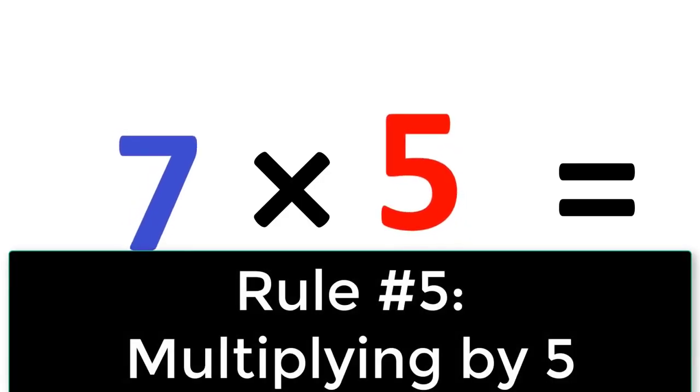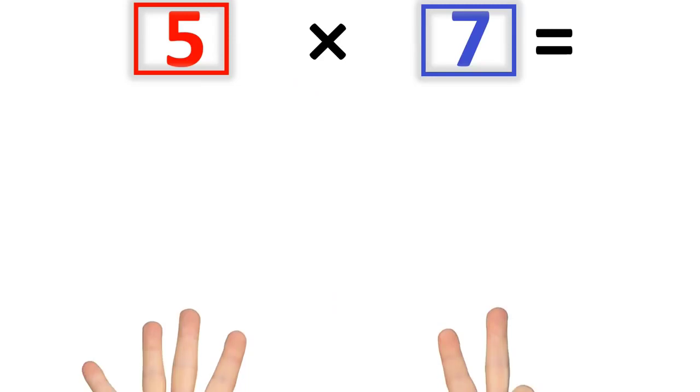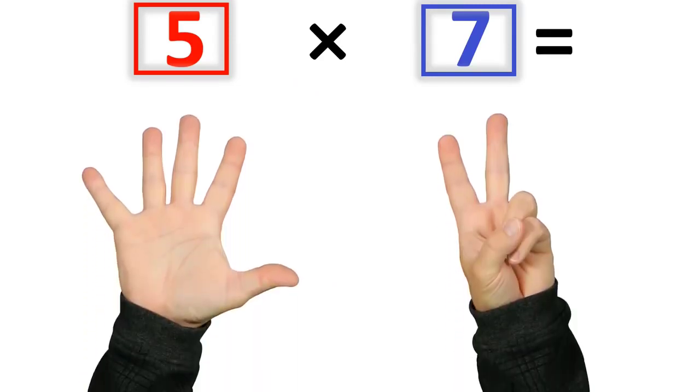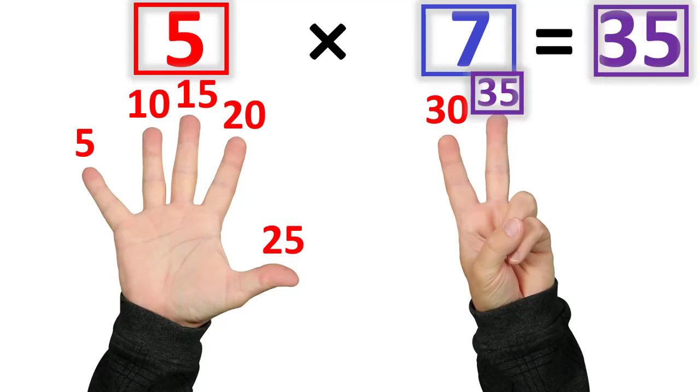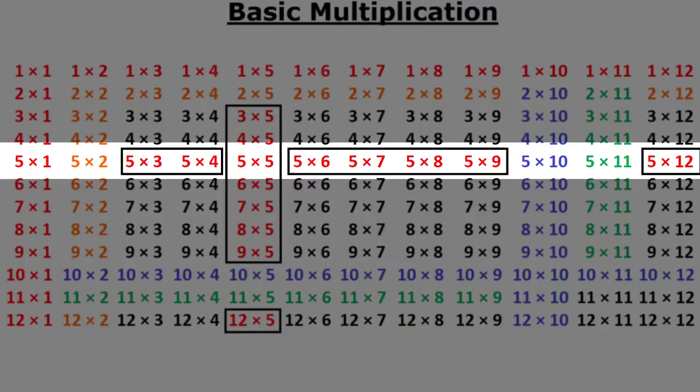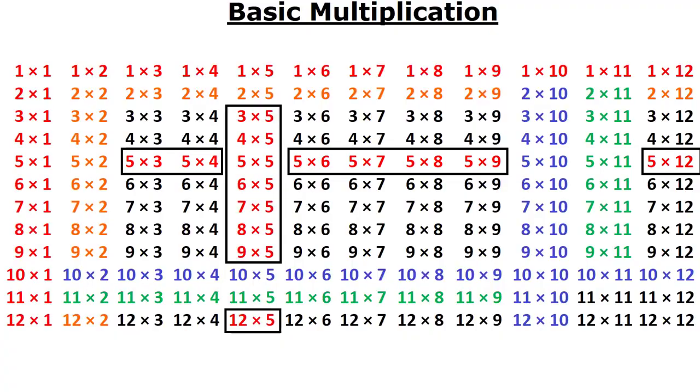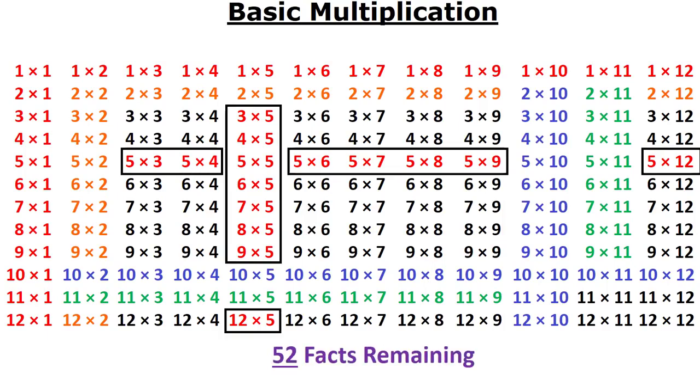So for rule 5, we're going to look at the number 5. And once again, we're going to use skip counting because 5 is one of the easiest numbers to skip count by. So when you have 7 times 5, that just means you're counting by 5 7 times. So 7 times 5 just means you go 5, 10, 15, 20, 25, 30, and on the 7th one you stop at 35. Pretty simple right? Well now that you know 1 times 5 all the way to 12 times 5. That means you also know 5 times 1 all the way to 5 times 12. So in total, you now know 92 multiplication facts from just 5 rules and there's only 52 remaining.